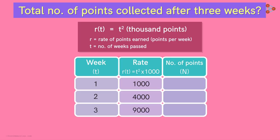So according to these rates, in the first week, the points earned will be 1000. In the second week, 4000. And in the third week, 9000. So 14000 points in total.